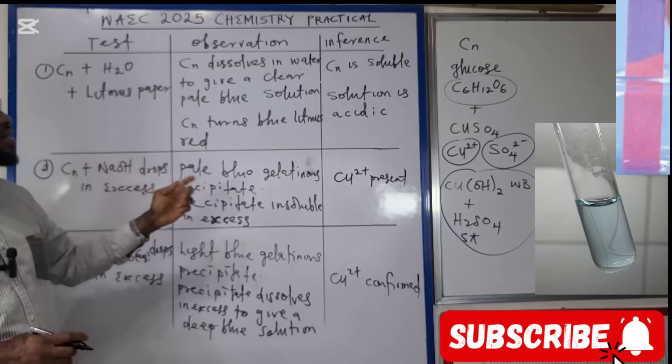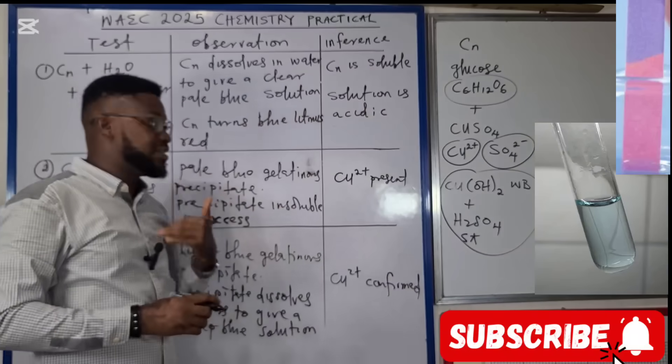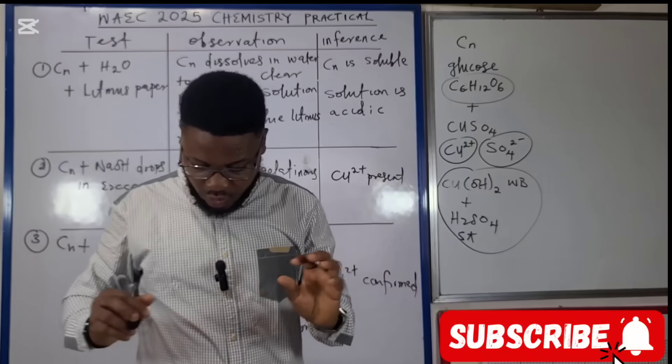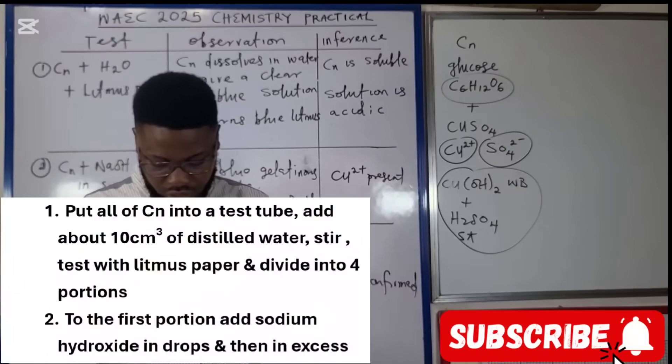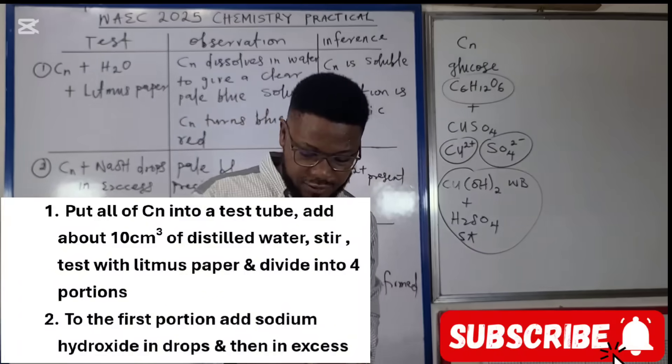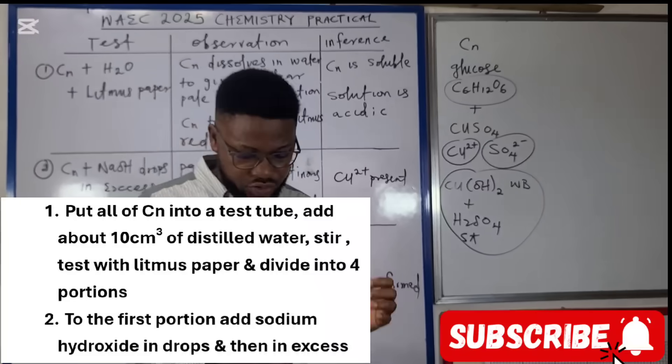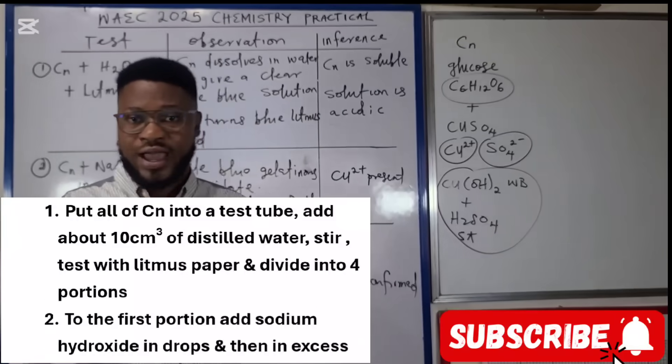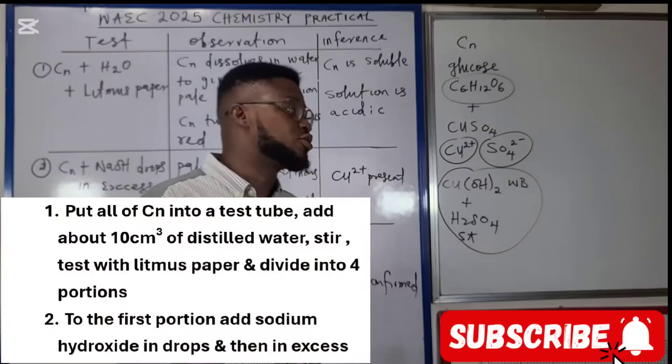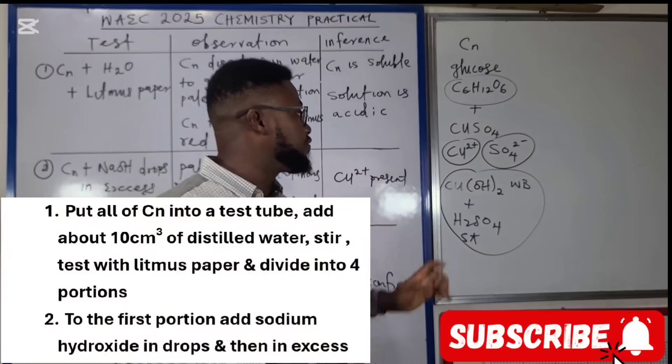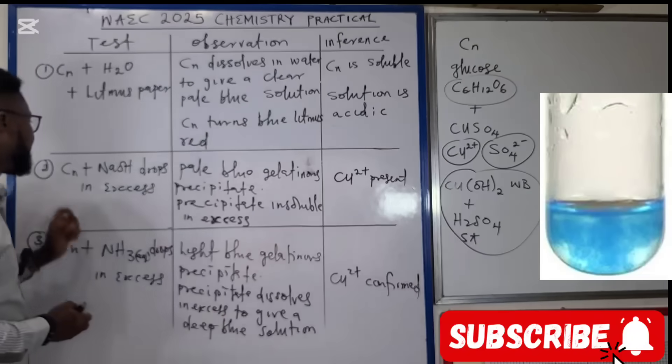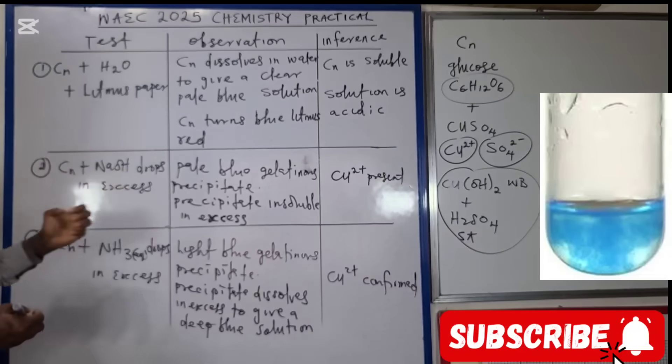Moving on to the next question, we should divide the resulting solution into four portions. To the first portion, add sodium hydroxide in drops and then in excess. Of course, whenever we use sodium hydroxide to test, we are trying to test for the positive ions, that is the cations, in this case copper two ions.